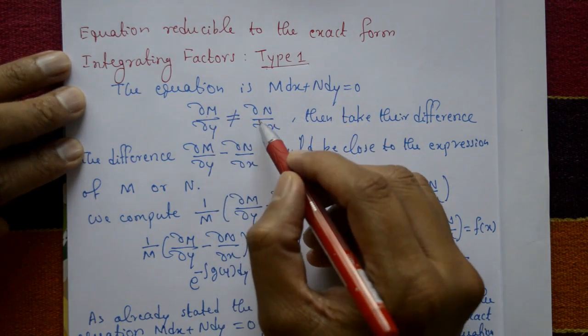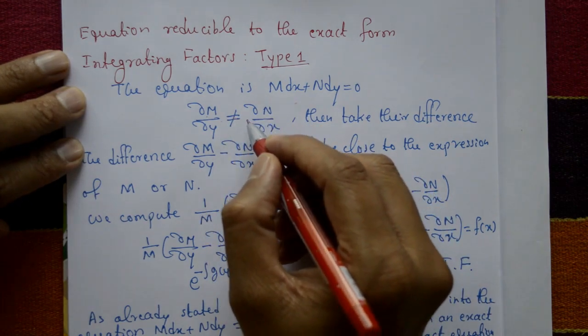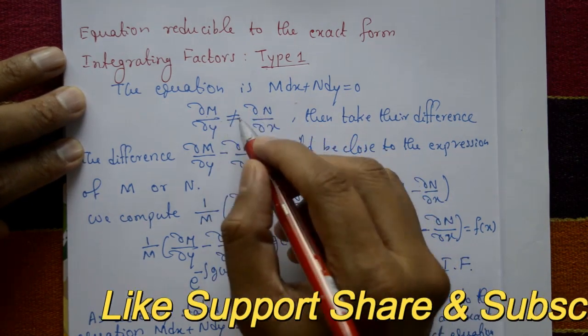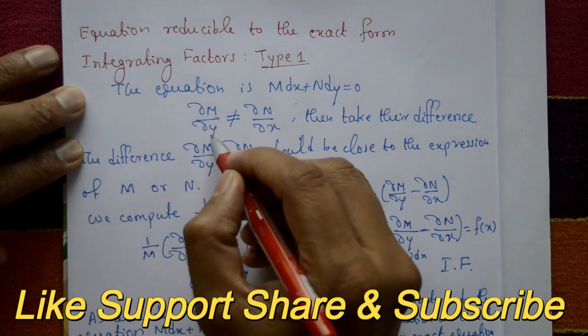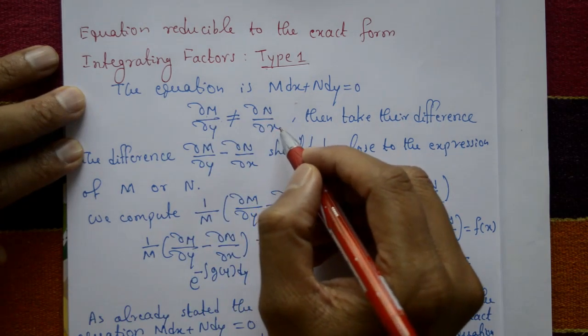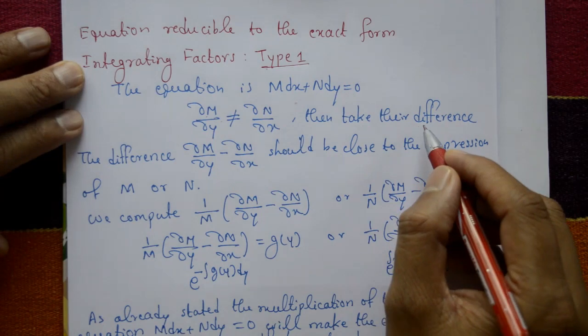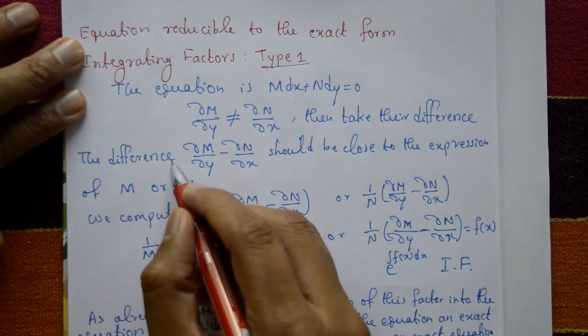Both are not equal to the same, that means ∂M/∂y is different, ∂N/∂x is different, they're not equal. Then take their difference. The difference is ∂M/∂y minus ∂N/∂x.